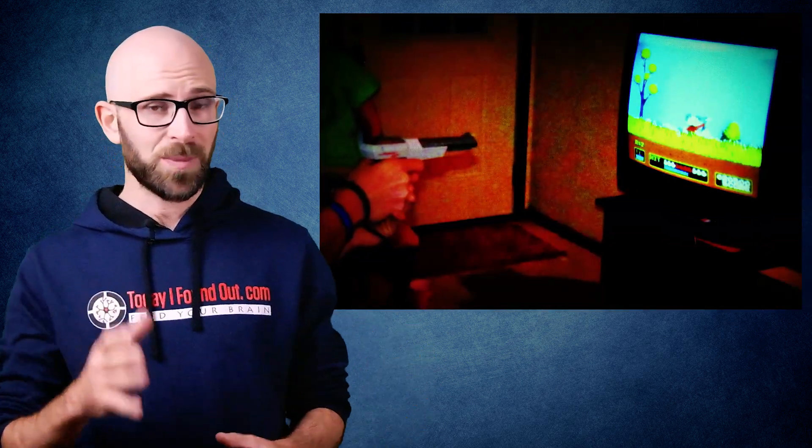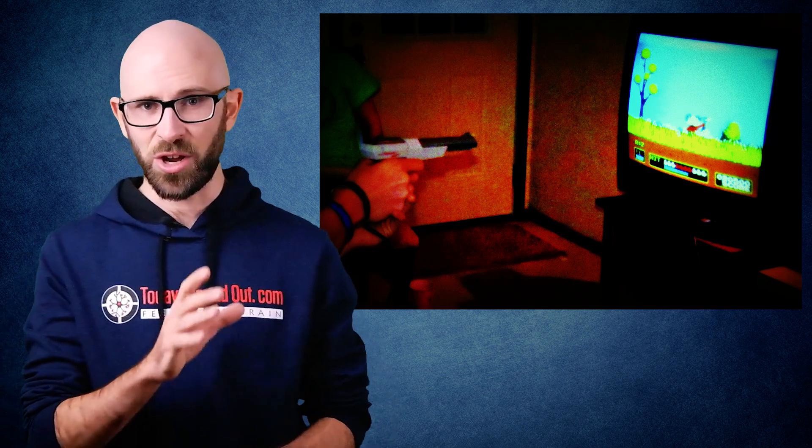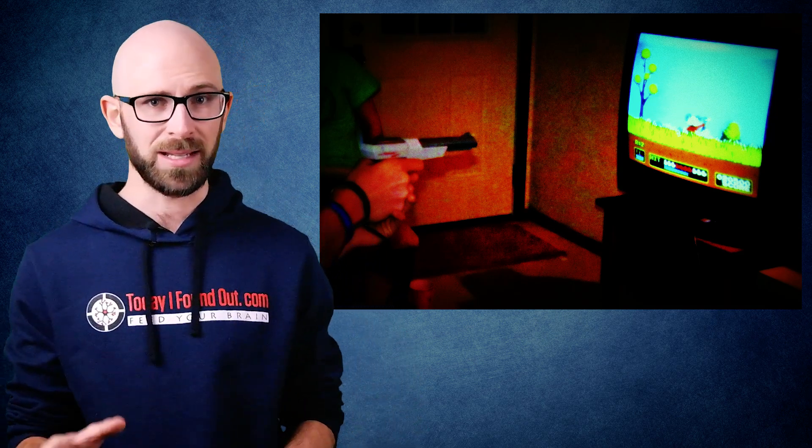In the next frame, the game causes the target area to turn white, with the rest remaining black. If the gun detects a shift from black to white from the gun's photodiode in that split second, it knows you were aiming correctly at the target, and so doesn't specifically need to know anything about where on the screen the target is.